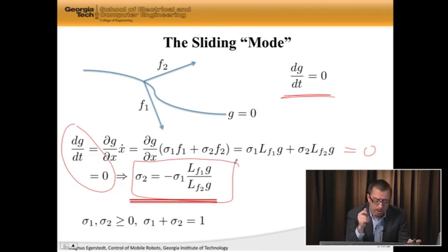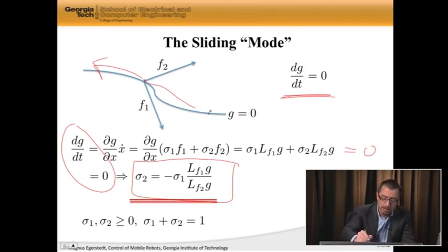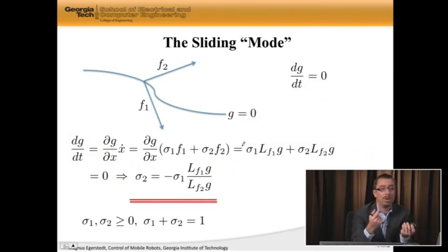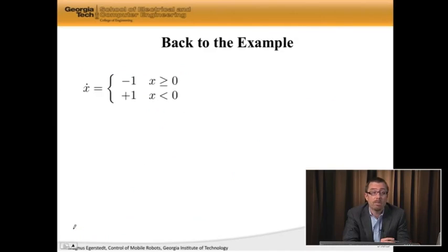Well, that's a good start. We also know that both sigmas need to be positive, because I'm not allowed to all of a sudden start flowing backwards. And they also should sum up to 1, because otherwise I can go super fast along this direction, which I typically don't want. I want it to respect the dynamics. So I have additional constraints here. The sigmas need to be positive, and they need to sum up to 1.